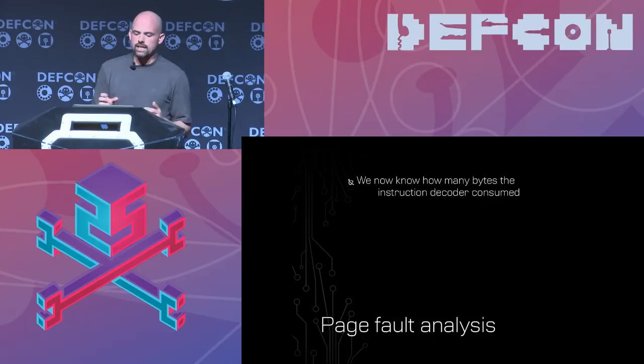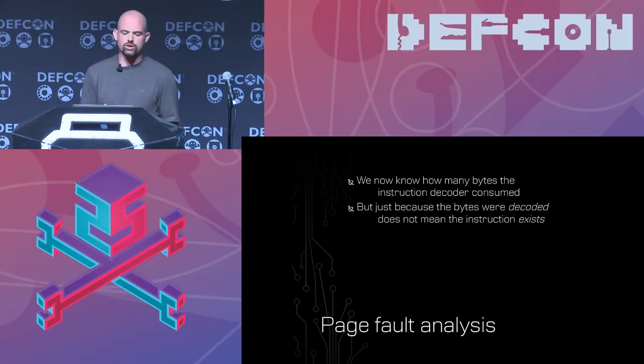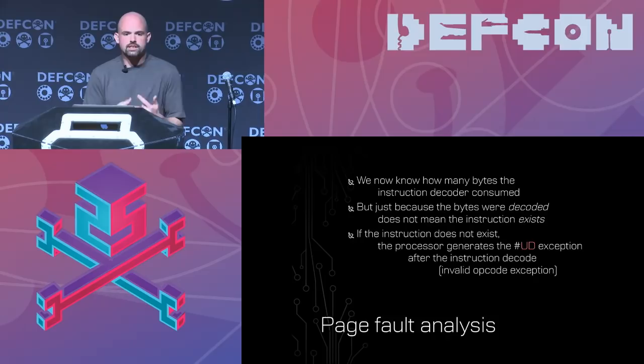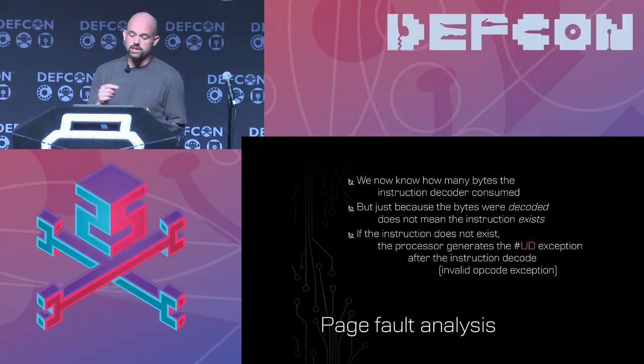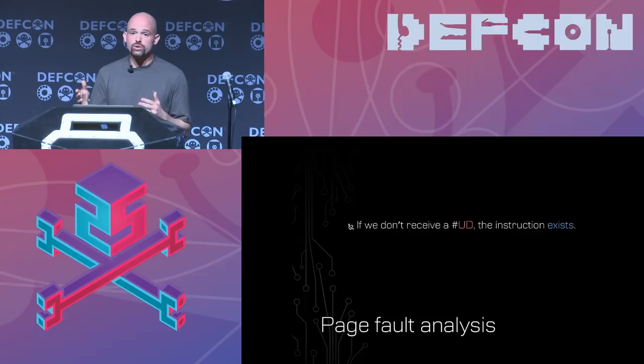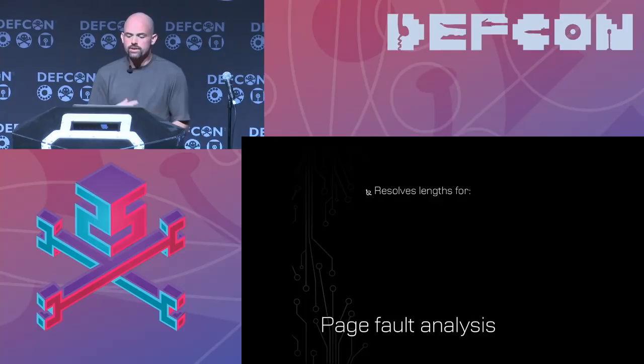Once we know the instruction length — how many bytes the decoder consumed — we check whether the instruction actually exists. If it really isn't there, the processor generates an undefined opcode exception. So if we receive anything other than a UD exception, we know this instruction actually exists on this processor. This approach lets us resolve lengths for successfully executing instructions, faulting instructions, privileged instructions — things that can only execute in ring 0, ring -1, or system management mode.